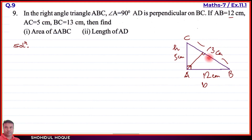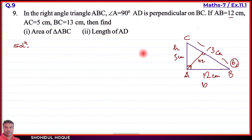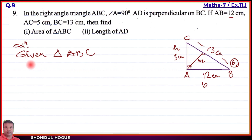For part number one, area of triangle ABC. The area formula is: area equals half into base into height. We have the given data. Given: triangle ABC. Base AB equals 12 cm. Height AC equals 5 cm. So we apply the formula: area equals half into base into height.